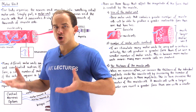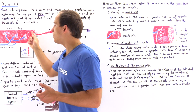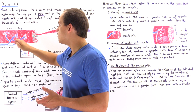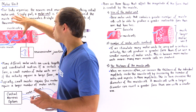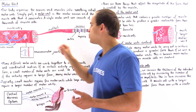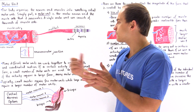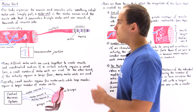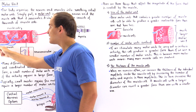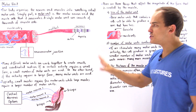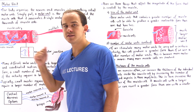A single motor neuron comes from the central nervous system and connects its synapses with our muscle cell. This is the axon of the motor neuron coming from the central nervous system, and it splits and synapses with our muscle cell. At the given synapse, we have the neuromuscular junction where our neurotransmitter, acetylcholine, transfers the action potential from the neuron to our muscle cell. So this muscle cell shown in red, as well as the motor neuron, is our motor unit — in this case consisting of a single muscle cell and a single motor neuron.